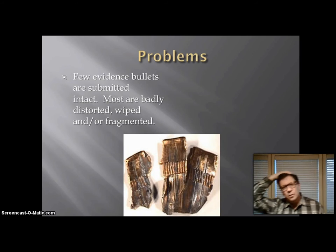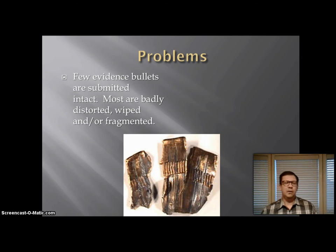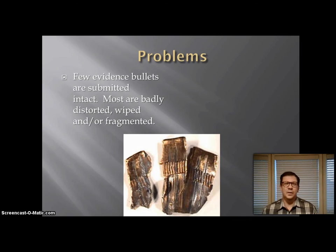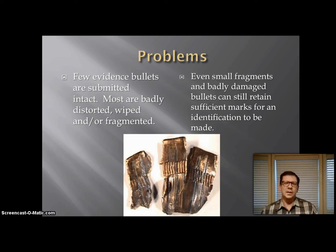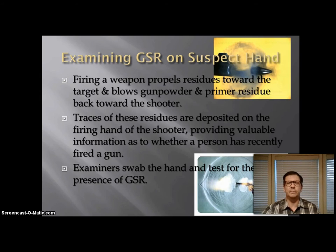One of the problems with bullets used as evidence is when they come into the crime lab, a lot of them are really messed up — distorted or damaged. Sometimes even small fragments can be really badly damaged. But sometimes even a small fragment can be used to identify the gun it came from.